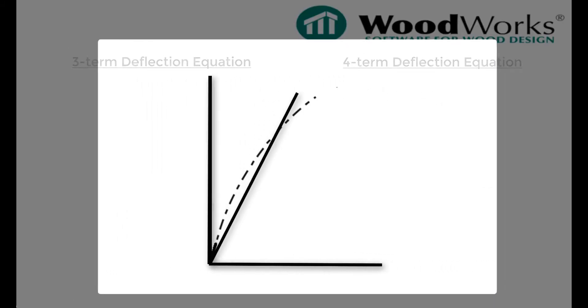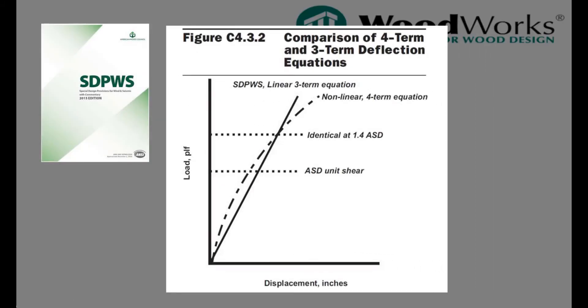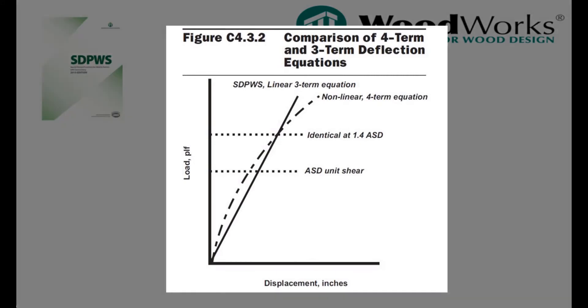This SDPWS figure illustrates the difference between the three-term and the four-term deflection equations. Notice that the two equations meet at a point where the shear wall has reached 100% of its design capacity.